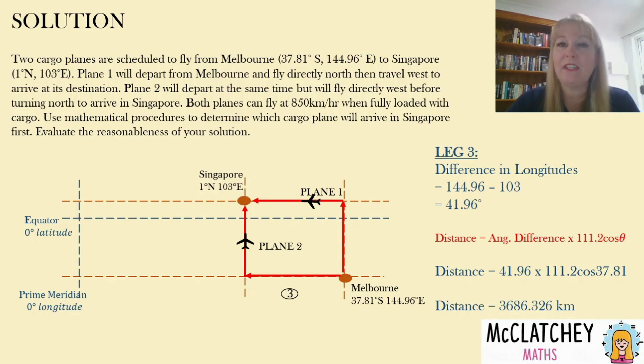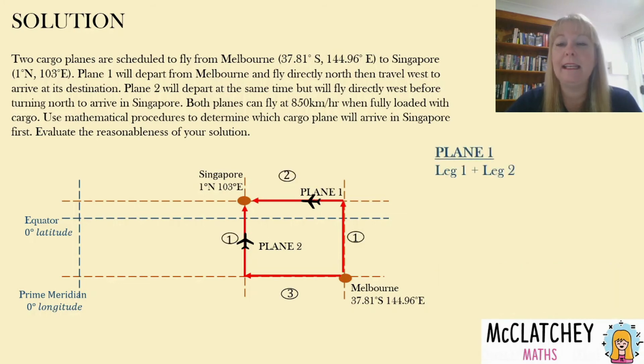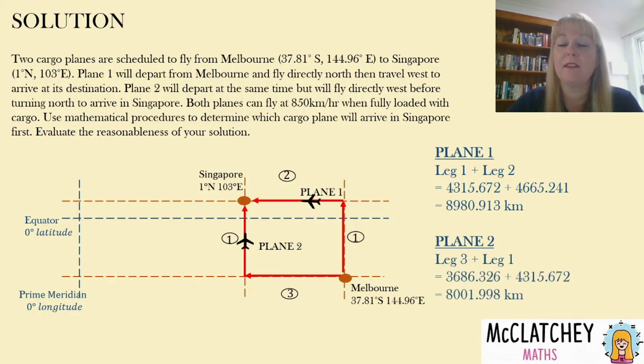So now we need to add that information together. Let's add leg one and leg two for plane one and we get 8,980 kilometers and for plane two, leg three and leg one gives us 8001.998 kilometers. So we can see in total that we've saved 980 kilometers by going west first and then north.